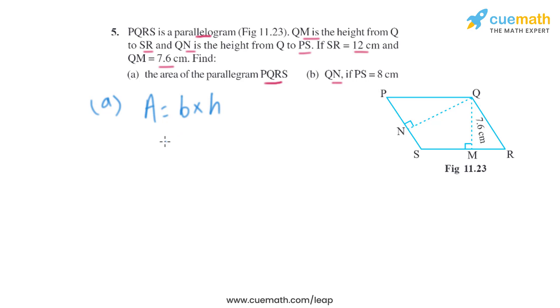The base is SR, which is 12 cm, and the height is QM, which is 7.6 cm. So when we multiply it, we will get the area as 91.2 square centimeters.